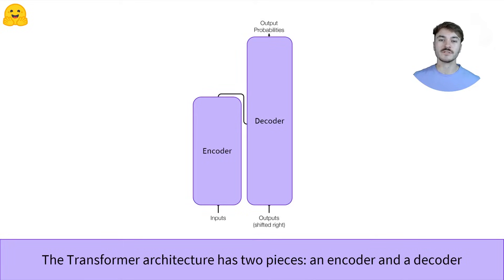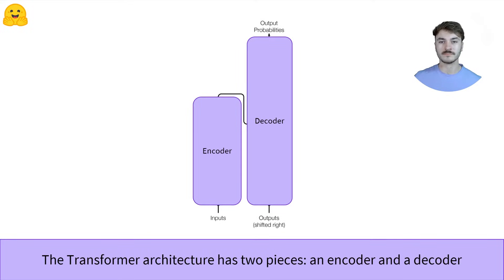Let's first start by splitting that architecture into two parts. On the left, we have the encoder, and on the right, the decoder. These two can be used together, but they can also be used independently.